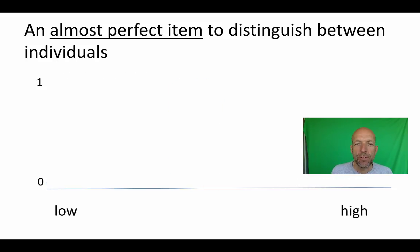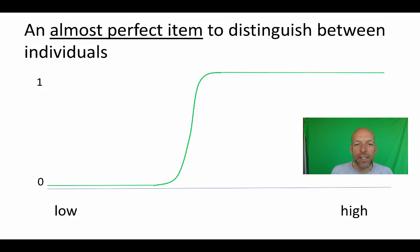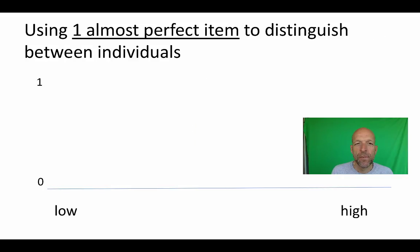The relationship between the latent trait and the item is estimated by a curve. Suppose that we want to use one almost perfect item to distinguish between individuals. This is the latent trait; here is the item.